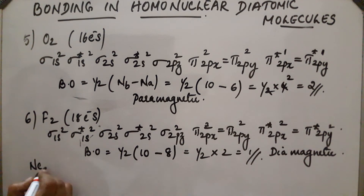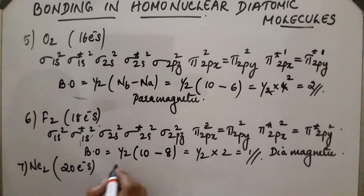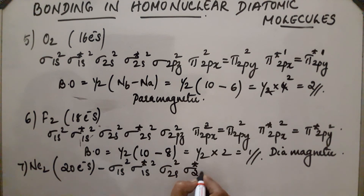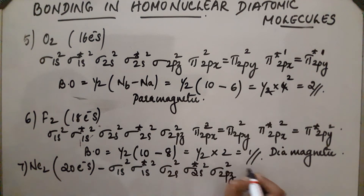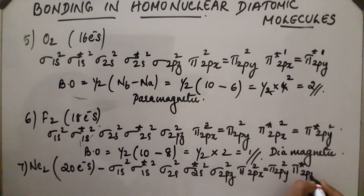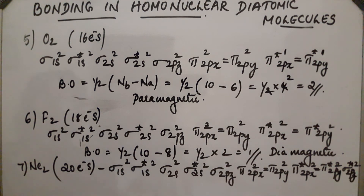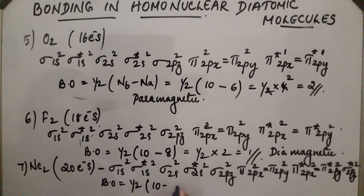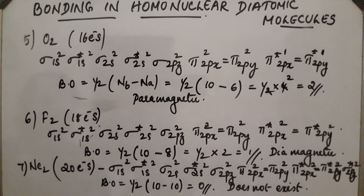Next is Ne₂, which contains 20 electrons. Its configuration is sigma 1s², sigma star 1s², sigma 2s², sigma star 2s², sigma 2pz², pi 2px², pi 2py², pi star 2px², pi star 2py², and sigma star 2pz². All 20 electrons are filled. Bond order = 1/2 into (10 minus 10) = 0. This means the Ne₂ molecule does not exist. These are examples of bonding in homonuclear diatomic molecules.